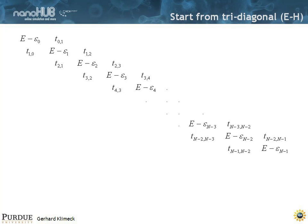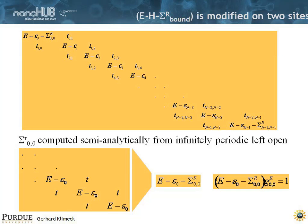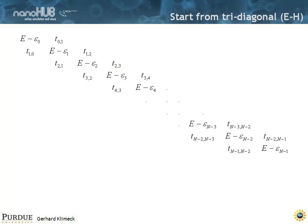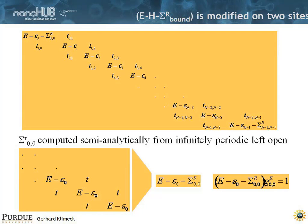We start from a tridiagonal matrix like this. What we have is on the left, up here, we want to fold into the self-energy. We want to isolate this whole point where we concatenate basically the whole semi-infinite left contact into a single self-energy. We have a sigma here, so from the previous slide that was no sigma, and if we include a sigma we basically include the whole semi-infinite contact on the left.